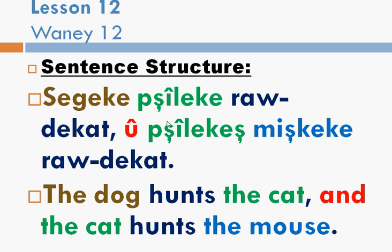And then after the comma, that's U — or if you pronounce it independently it will be W. Pshilaka means 'and the cat'. Pshilak is cat. Ka is like saying 'the'. It is like saying 'too' or 'as well'. But in English for this sentence you do not need to translate the ka. We'll talk about it later. Pshilaka, Mishka, raudakat.